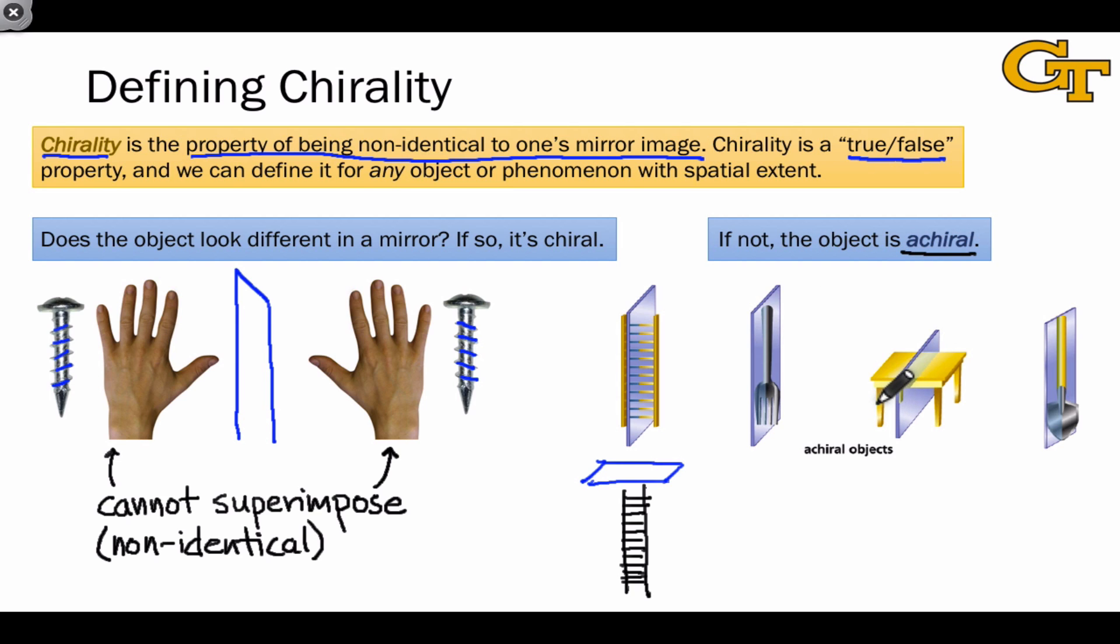Achiral objects lack chirality, meaning they are identical to their mirror images. Because chirality is a true-false property, molecules and more generally all objects are either chiral or achiral.